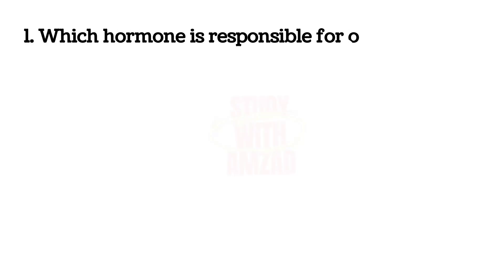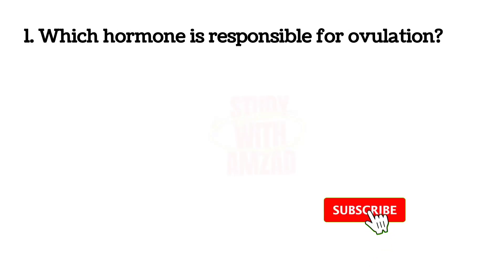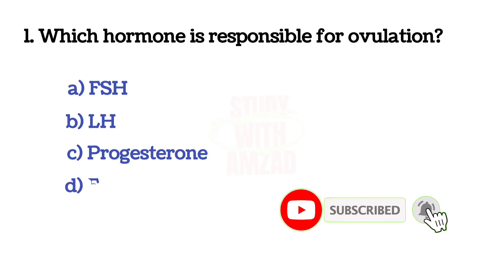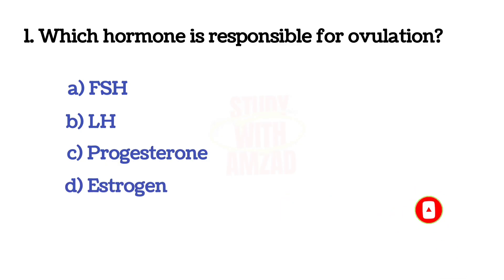Which hormone is responsible for ovulation? The correct answer is B: LH (Luteinizing Hormone).